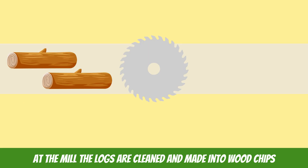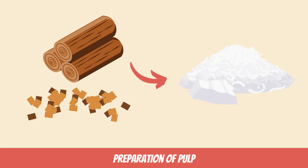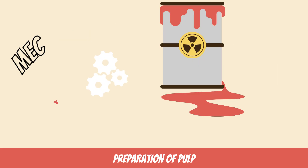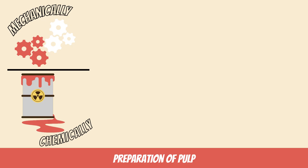Some mills then send the logs through a chipper to break the logs into tiny pieces, known as wood chips. Now preparation for the pulp can begin. There are two ways the pulp can be produced: either mechanically or chemically.